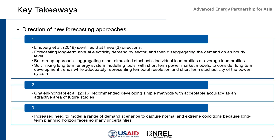Lastly, we identified potential directions of new load forecasting approaches. In 2019, Lindbergh and others highlighted three directions: number one, forecasting by sector then disaggregating on an hourly basis; number two, aggregating the stochastic individual load profiles; and number three, linking short-term and long-term development trends. In 2016, Gale Kondabi and others recommended the development of simple methods with acceptable accuracy. And because long-term planning horizon faces so many uncertainties, there is an increased need to model a range of demand scenarios to capture normal and extreme conditions.